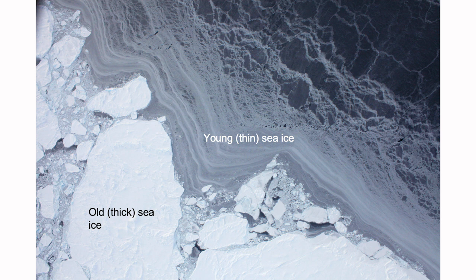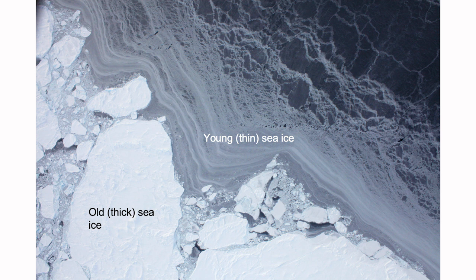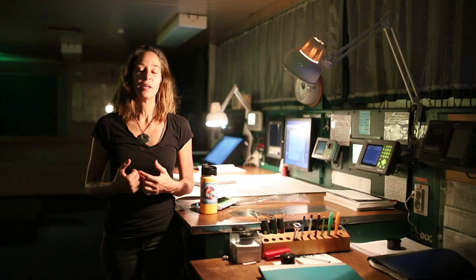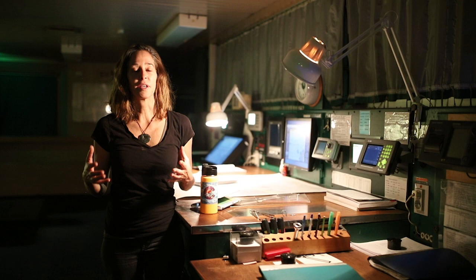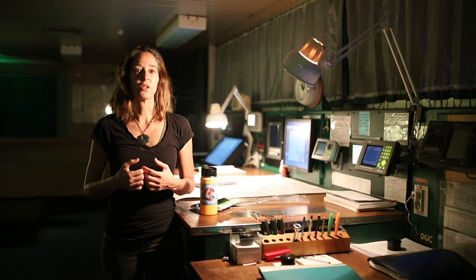But that really started to change in sort of the mid-1990s. And part of this was attributed to just changes in atmospheric weather patterns that was flushing some of that old thick ice out of the Arctic Ocean. But now since the 2000s, you've just seen this continued reduction in how old the ice is in the Arctic Ocean. So really old thick ice is now melting out every summer. And this is one of the reasons why we've seen this large reduction in the summer ice cover that is not recovering.